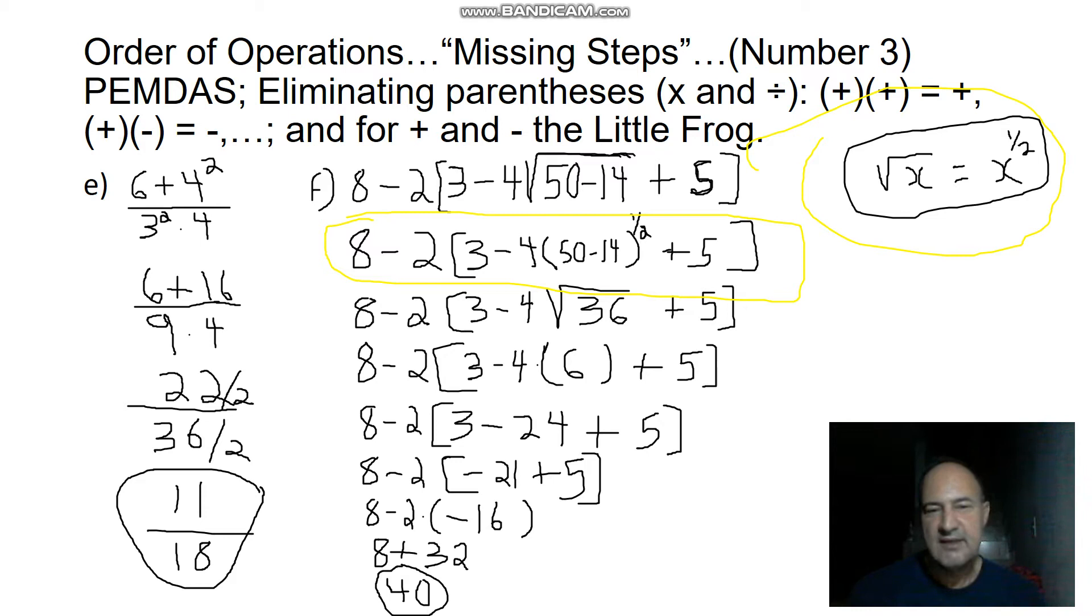Let's concentrate on the third step. We have 8 minus 2 times 3 minus 4 times square root of 36 plus 5. What is the next step? Solving the exponent, because the square root is the first thing we need to solve. What is the number? It is 6, because 6 times 6 equals 36, and we are going to put the 6 inside a parenthesis.